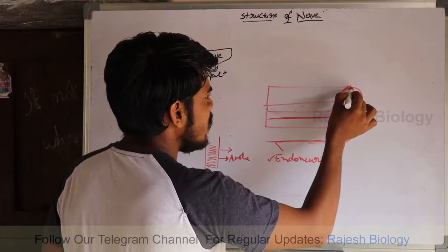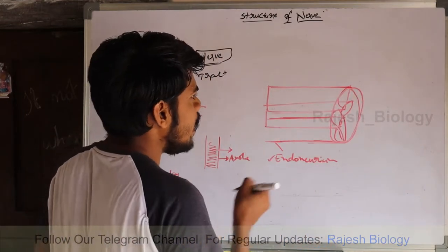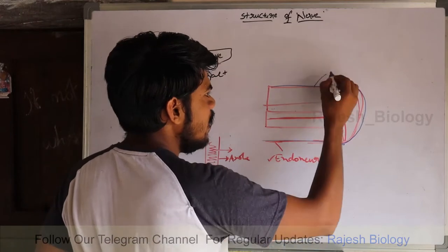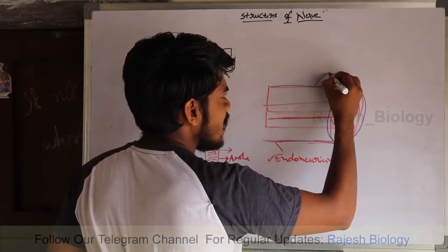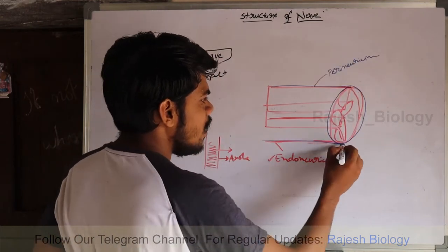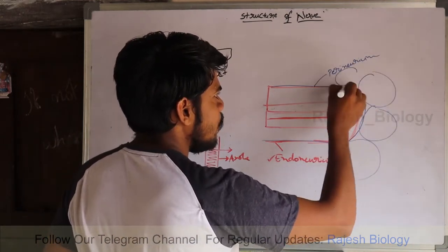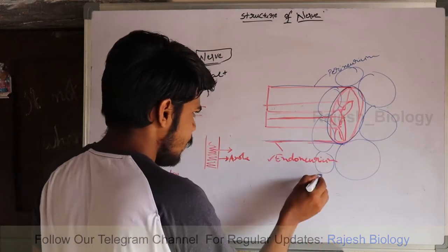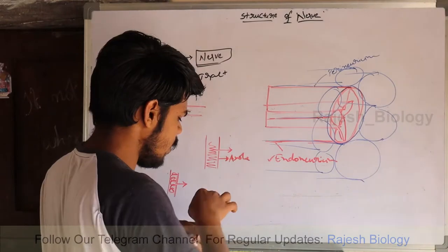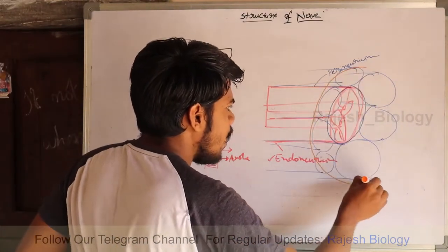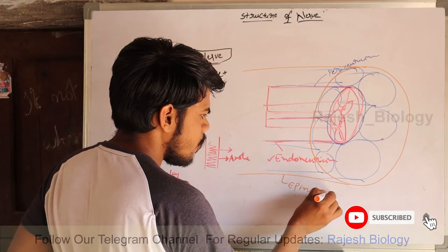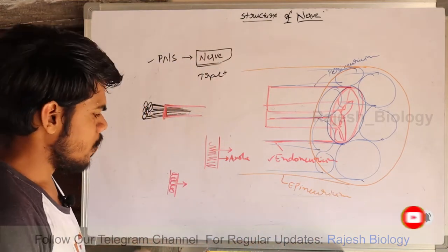That fascicle is covered by perineurium. 'Peri' means around, so perineurium surrounds the fascicle. A fascicle contains a number of nerve fibers. There are a number of fascicles within a nerve, and those fascicles are covered by epineurium.